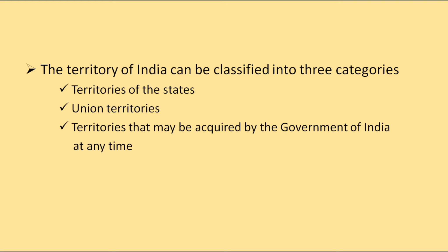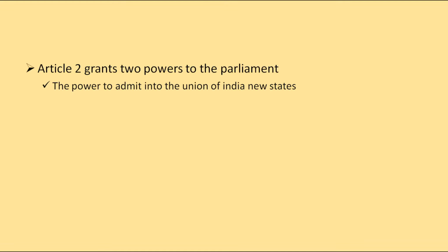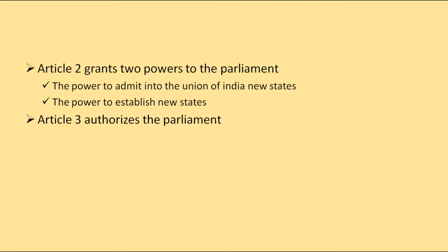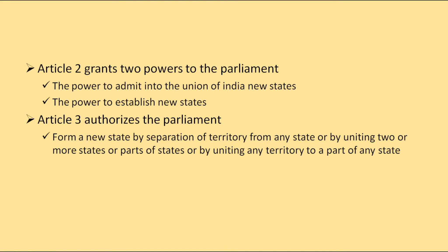Article 2 grants two powers to the Parliament: first, the power to admit into the Union of India new states, and second, the power to establish new states. Article 3 authorizes the Parliament to form a new state by separation of territory from any state, or by uniting two or more states or parts of any state, or by uniting any territory to a part of any state.